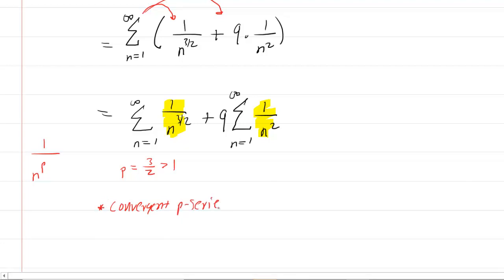For the next series, the value of p is 2, which is also greater than 1. So that too is a convergent p-series.